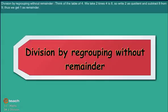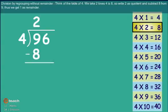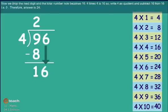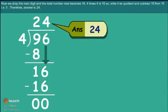Division by regrouping without remainder. Think of the table of 4. We take 2 times 4, so write 2 as quotient and subtract 8 from 9 to get 1 as remainder. Drop the next digit so the total becomes 16. 4 times 4 is 16, so write 4 as quotient and subtract 16 from 16. The answer is 24.